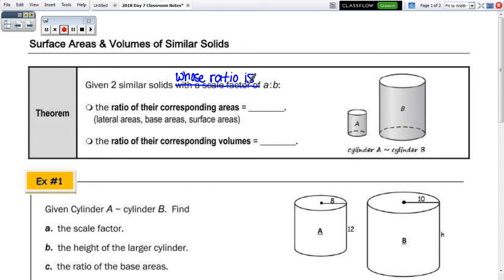Okay, so that could be a ratio of heights, or the radius, or radii. Given this similarity ratio, the ratio of their corresponding areas, which could be lateral areas, base areas, surface areas, is A squared to B squared. So when you think of areas, areas measured in square units, that might help you remember the ratio for the corresponding areas. And volume is measured in cubic units, so the ratio of their corresponding volumes is A cubed to B cubed.